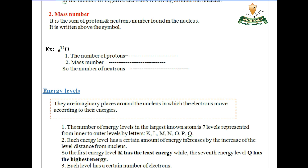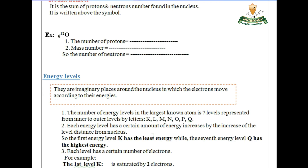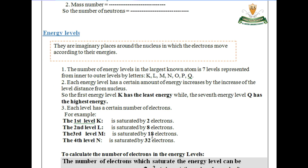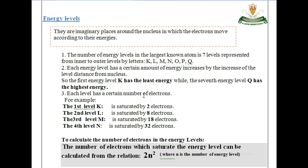Q is the highest energy level. When we go from the nucleus outward — from K level to Q level — the energy of the levels increases.